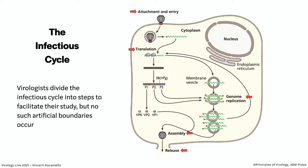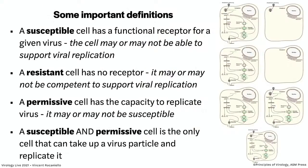The infectious cycle is today's topic. We're going to talk about what it is and how you study it. But before we do that, we need some definitions, as always, because virologists use words differently from everyone else. First of all, a susceptible cell — this is all about cells in culture. A susceptible cell, when I say that, it means the cell has the receptor for a virus. That is all it means.